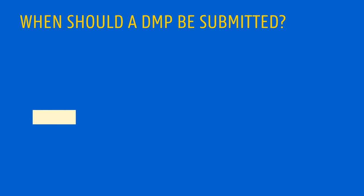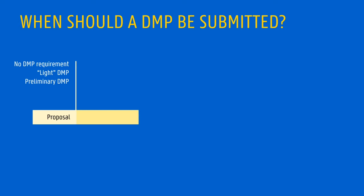The proposal stage is where the various requirements diverge most. Your institution or funder might not have any specific requirements with regards to data management. Another possibility is that the proposal needs to address some RDM questions or include a light version of a DMP. In other cases, a preliminary but full version of the DMP might be required. When your project is approved, a first version of the DMP will usually be required shortly after, often no later than 6 months after the start date.